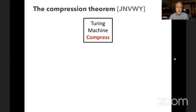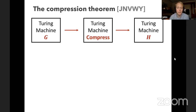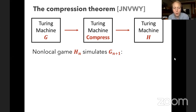The key property is that non-local game H_n should simulate non-local game G_{n+1}. So you compress your family down a level — H_1 simulates G_2, H_2 simulates G_3, and so on. The idea is to shift everything over one level, and by 'simulate' we mean there is some formal correspondence between the accepting probabilities and strategies of the two games.